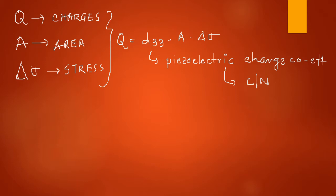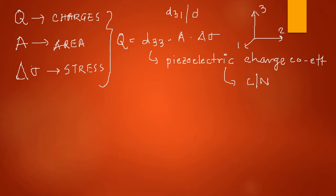The '33 mode' means: if this is direction 1, direction 2, and direction 3, it means the polarization and the applied stress are in the same direction. There are other modes available — d31 or other modes — and the 15 mode can also be obtained if you apply a shearing stress.